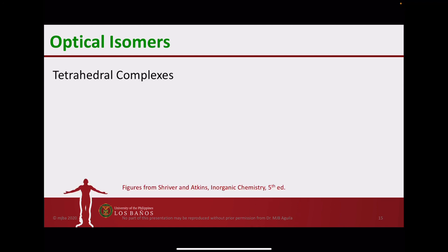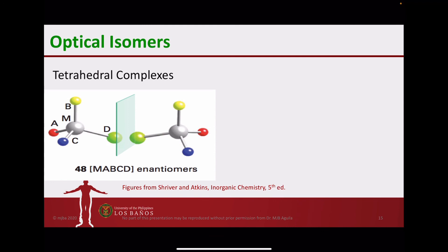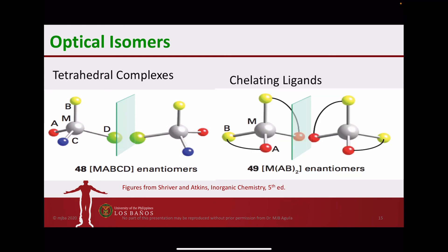Tetrahedral complexes can be optically active if we have four completely different groups around the central metal. Additionally, if we have two chelating ligands of the same type — represented as AB in the formula — because of the chelate ring that is formed, it restricts the possibility of superimposability of the two mirror images. So this is also an example of optical isomerism for tetrahedral complexes.